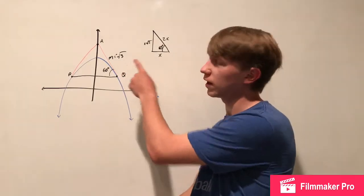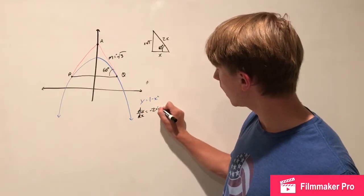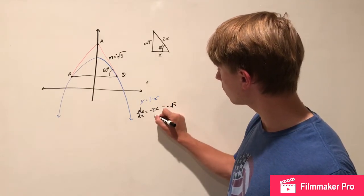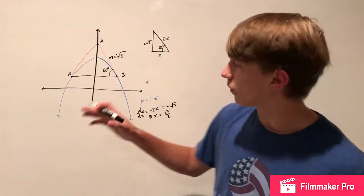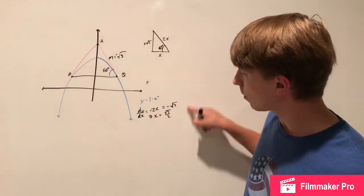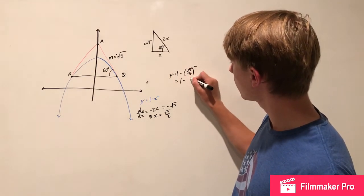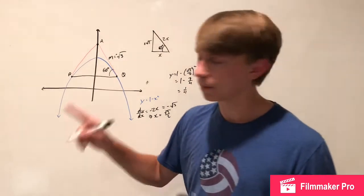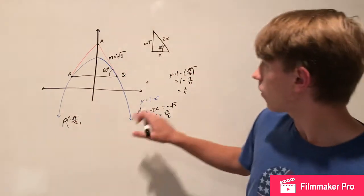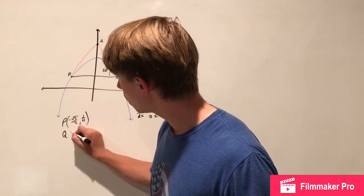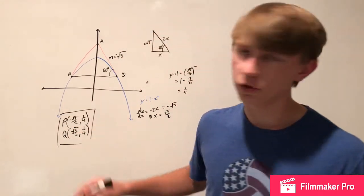So we know the slope, and we have the function, so we can take the derivative and find the point at which the slope equals negative root 3. dy/dx equals negative 2x. Setting that equal to negative root 3, we get x equals root 3 over 2. For P, x is negative root 3 over 2. Plugging back into y: y equals 1 minus (root 3 over 2) squared equals 1 minus 3/4 equals 1/4. So our two points are P at (negative root 3 over 2, 1/4) and Q at (root 3 over 2, 1/4).